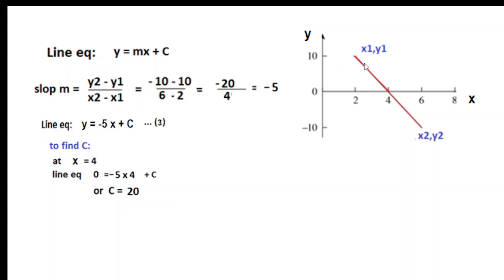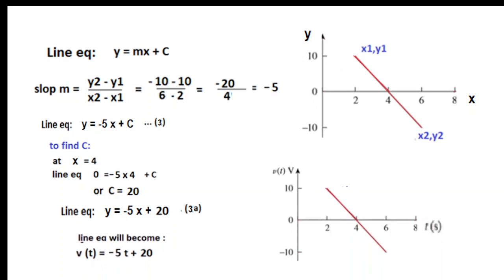Our equation will be y = -5x + c. To find c, the intercept will be somewhere along the y-axis, so we use the point where y = 0, which is at x = 4. Putting y = 0 and x = 4: 0 = -5(4) + c, so c = 20. The y-intercept is +20, giving the final equation y = -5x + 20. If the axes are given as Vt and t, we just change y to Vt and x to t. I hope you will now be able to follow all questions in chapter 1 and chapter 5 of the circuit analysis book.